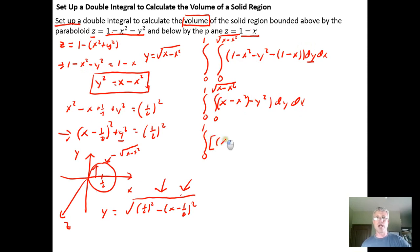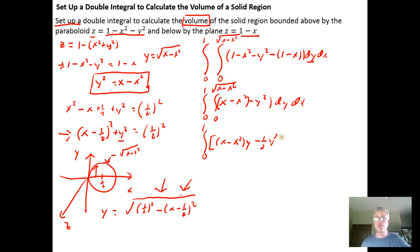Integrating with respect to y first while holding x constant, we get the integral from 0 to 1 of: (x minus x squared) times y minus (1/3) y cubed, evaluated from 0 to the square root of (x minus x squared). Plugging in the lower bound of 0 zeroes everything out, so we just plug in the upper bound.